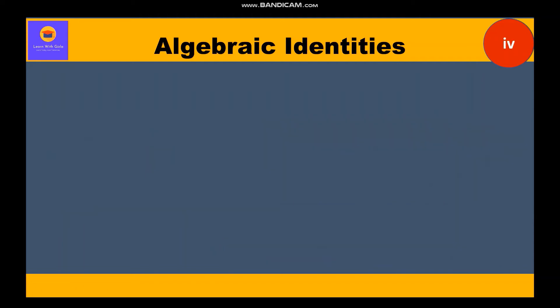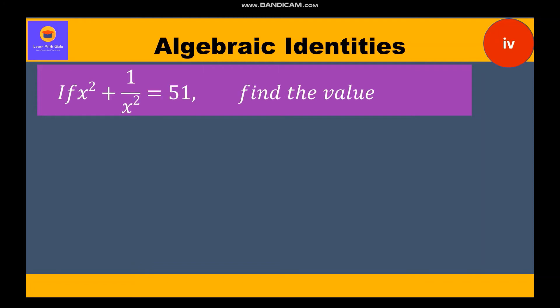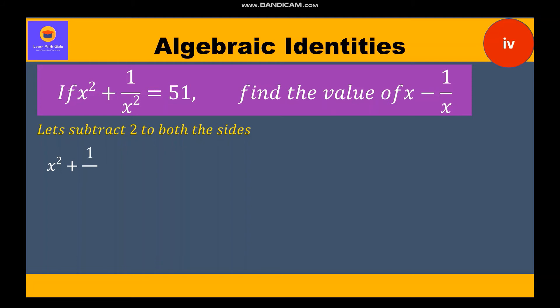Now let's move to question number 4. It is given: if x square plus 1 by x square is equal to 51, find the value of x minus 1 by x. It is given x square plus 1 by x square equals 51 and we have to find x minus 1 by x. There is a minus here, so we need to subtract 2 on both sides so that it looks in the form of identity 2. We write x square plus 1 by x square minus 2 is equal to 51 minus 2.